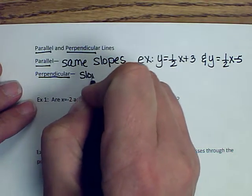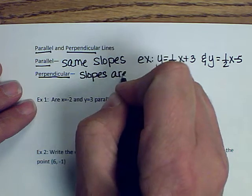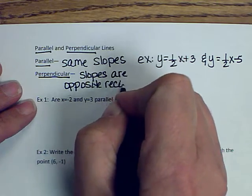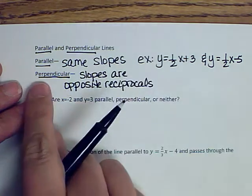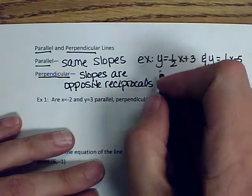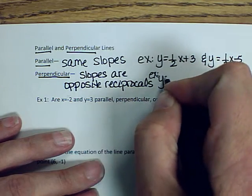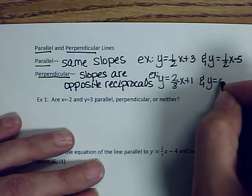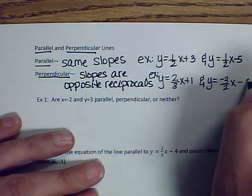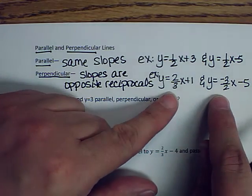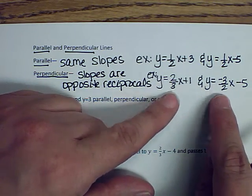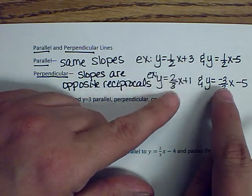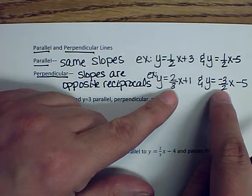Perpendicular lines have slopes that are opposite reciprocals. For example, y equals 2/3 x plus 1 and y equals negative 3/2 x minus 5 are perpendicular. Because 2/3 and negative 3/2 are opposite reciprocals — opposite means different signs, and reciprocal means flip the fraction over.